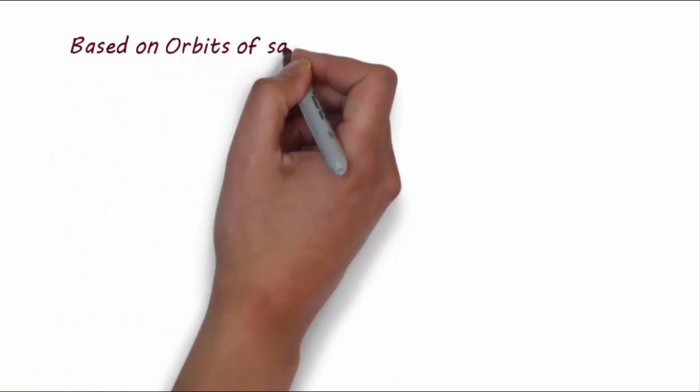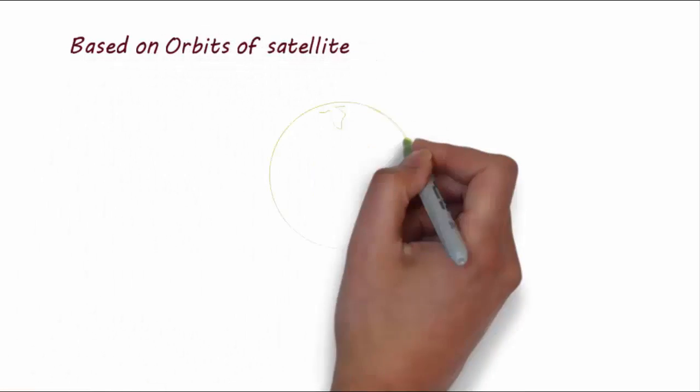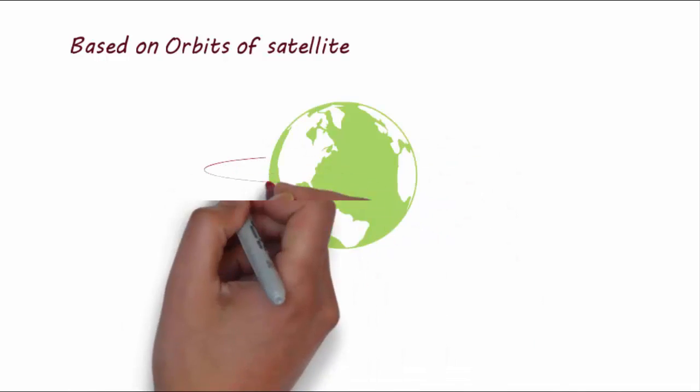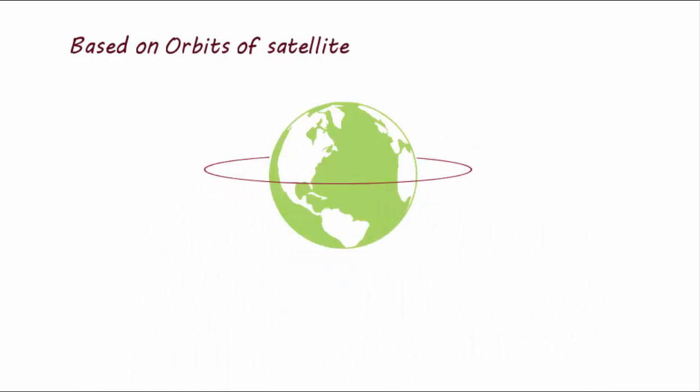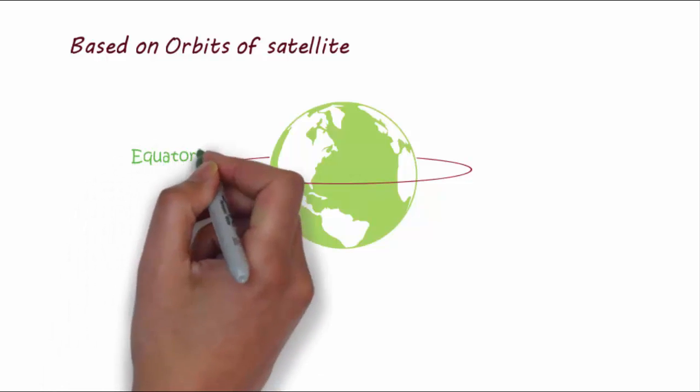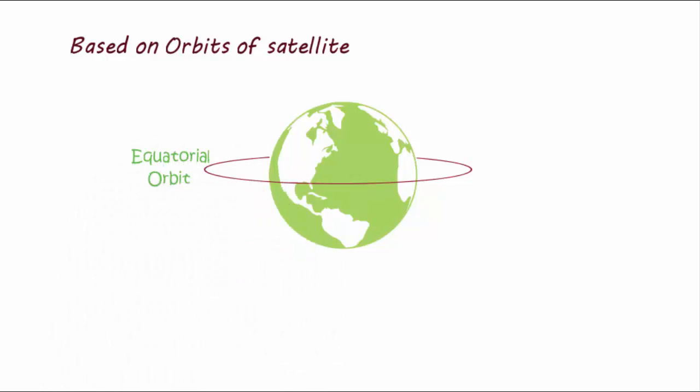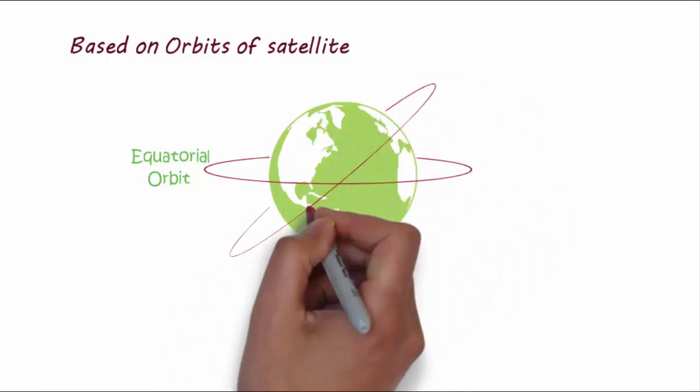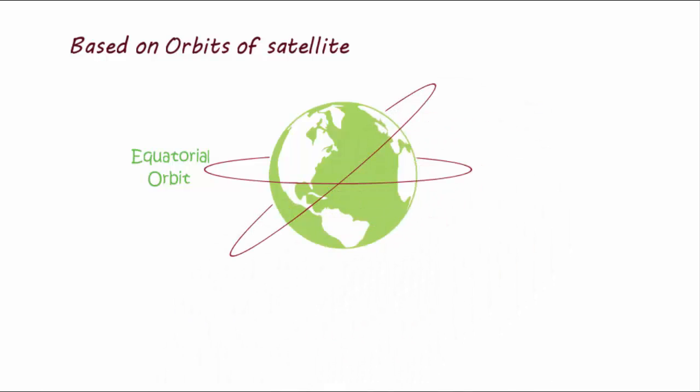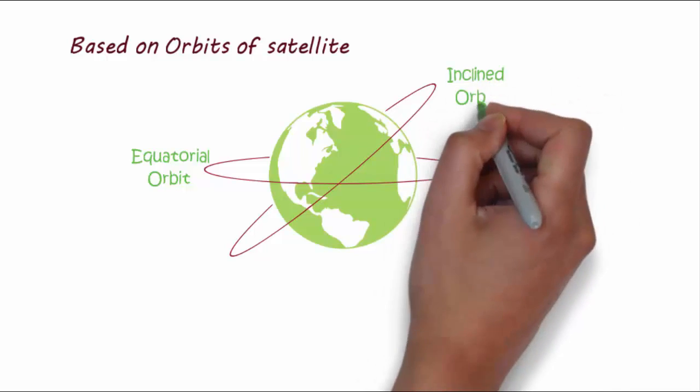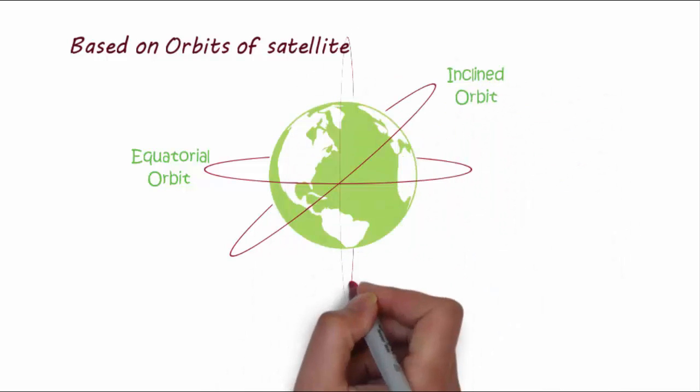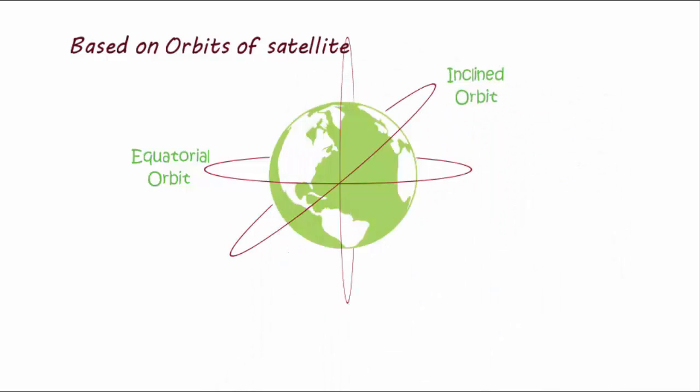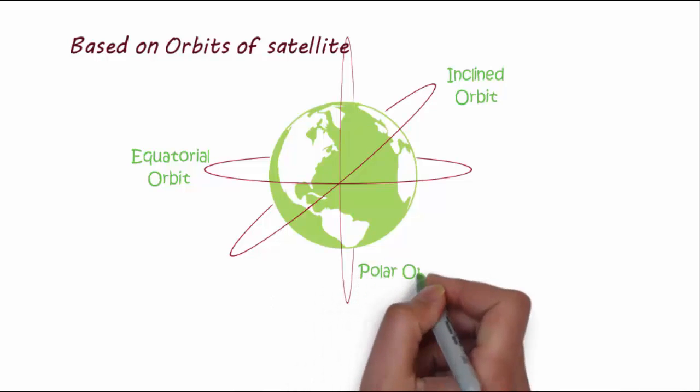Now based on orbits, satellites are divided in three categories. If the satellite revolves in the equatorial plane of earth, then its path is called equatorial orbit. If its path is inclined at an angle to the equatorial plane, then it is called inclined orbit. And if the orbit of the satellite makes 90 degree with the equatorial plane, then it is called polar orbit.